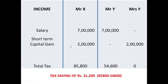Let's see this with an example. Mr. X has a salary income of 7 lakhs and he made 2 lakhs short term capital gain. On 7 lakhs he will pay as per the slab rate, and on this 2 lakhs he will pay 15%. So he will end up paying taxes of 85,800.